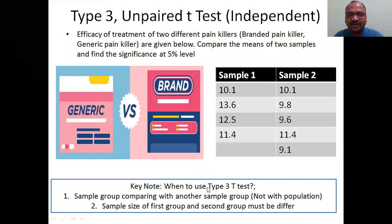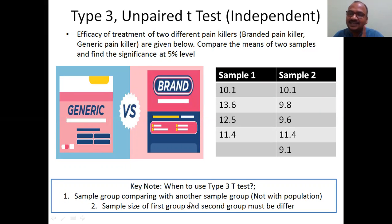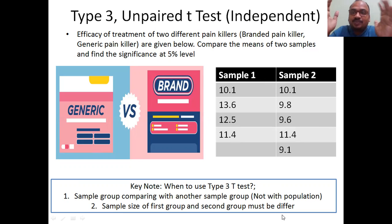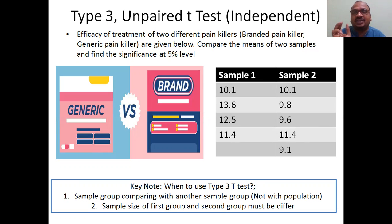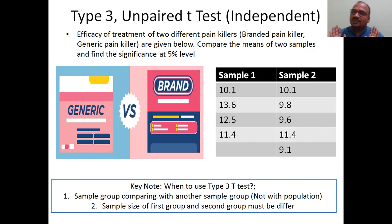When do you use the Type 3 t-test? You use it when you are comparing one sample group with another sample group — not with the population. The population is large; a sample is what we have collected from the population. So Type 3 is for comparing one sample with another sample, not with the population.